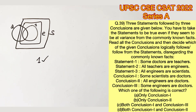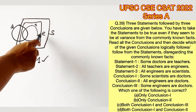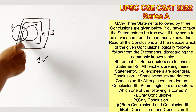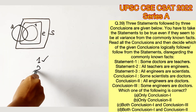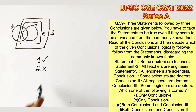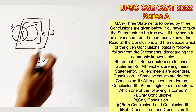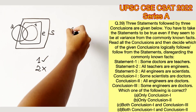Conclusion two says all engineers are doctors — this is not true in our case, so we can eliminate that. The next conclusion says some engineers are doctors, which is true in the case that we have drawn.